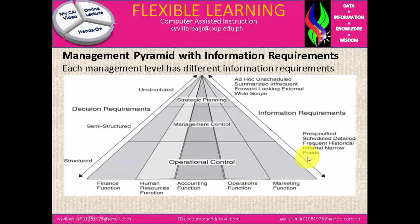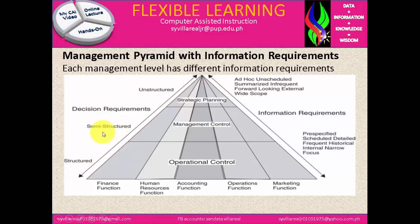Next is the management pyramid with information requirements. Each management level has different information requirements. We have operational control, management control, and strategic planning, which identifies on the three levels mentioned earlier: strategic, managerial, and operational. On the left side, we have unstructured decision requirements, semi-structured, and structured — with arrows going up and down. On the right side, we have ad hoc, unscheduled, summarized, infrequent, forward-looking, external wide scope information requirements, and pre-specified schedule, detailed, frequent, historical, internal, narrow focus — also with arrows going up and down. Below, there are a series of tabs from the finance function to the marketing function, identifying that there are plenty of different information needs at each level.